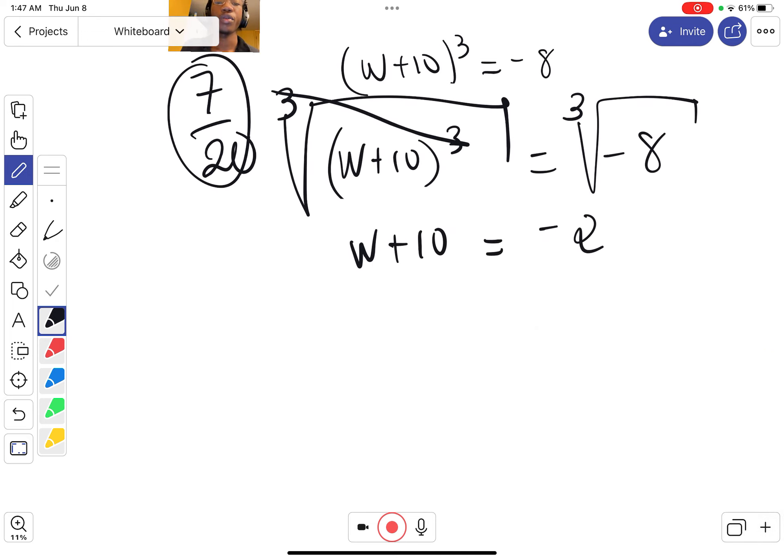Solving the equation: w = -2 - 10, which equals -12. There you have it, real quick.